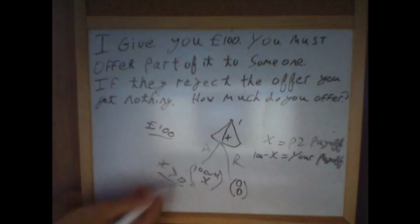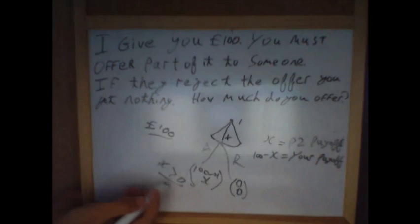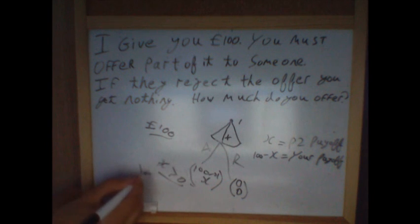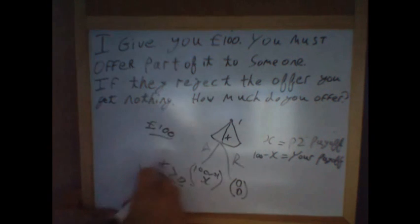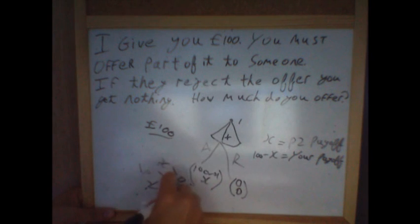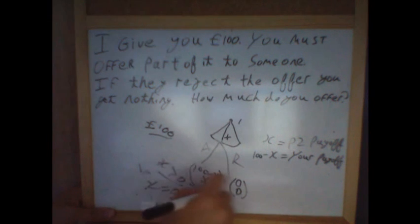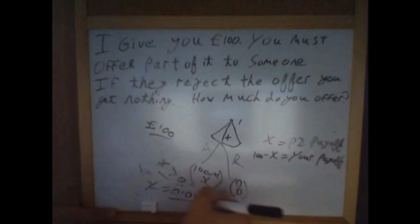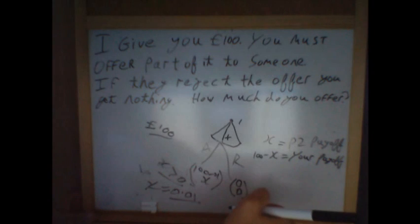And knowing this, it seems very obvious what offer you should give. If x is always greater than zero, and you want to maximise 100 minus x, you should offer one pence — x equals 0.01 — giving player two a payoff of one pence and giving you a payoff of £99.99.